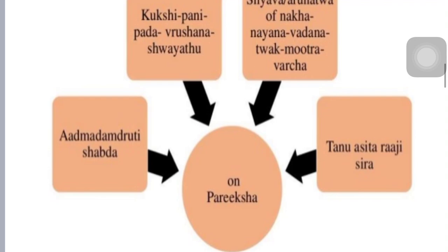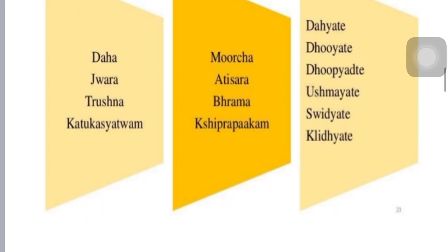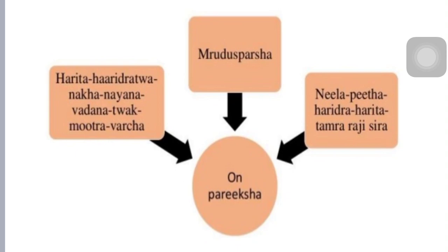In Pittodara: Daha — burning sensation, Jvara — fever, Trishna — thirst, Katu-kasa — bitter taste in the mouth, Murcha — fainting, Khiprapaka — rapid digestion impairment. The abdomen shows a burning sensation described as Dahyate, Dujyate, Dupyate, Ushmaayate, Sudhyate. On examination, the abdomen feels soft (Mridu Sparsha). The crease lines are of Harita, Haridra, Naka, Nayana, Vadantwa, and Varna — yellow-type pigmentation. The face, urine, and stool color will also be yellow.